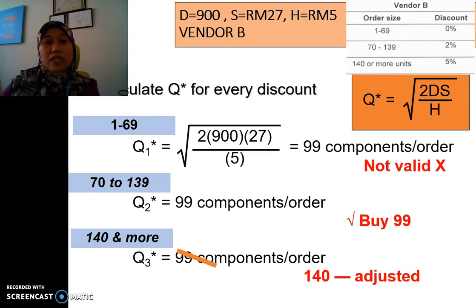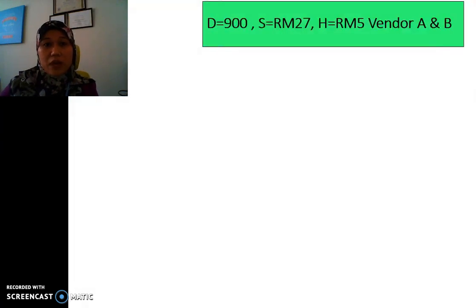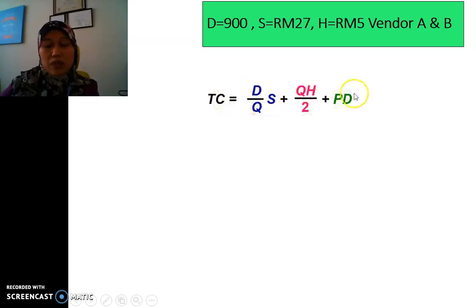Now we need to calculate the total cost in which we can compare for all the Q that we need to buy. Remember vendor A and B. These are the total cost formula that we need to use. We have PD at the end because it involved with the price. We have different price for each rules.